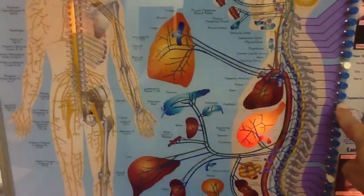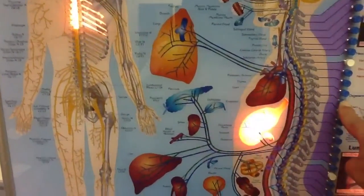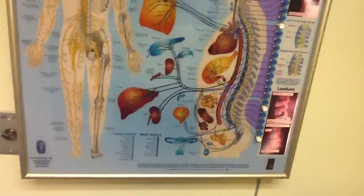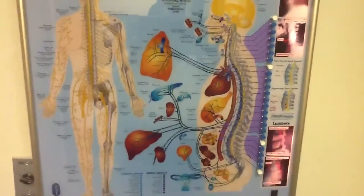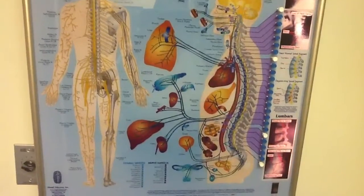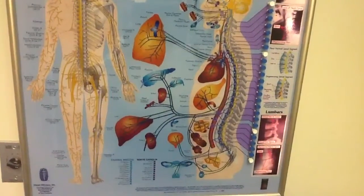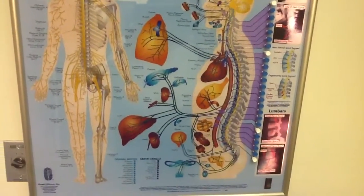The nerves that come from the T5 area in the mid-back can go to the stomach. Some of the effects that may be helped here could include stomach conditions, stomach troubles including nervous stomach and digestion issues.